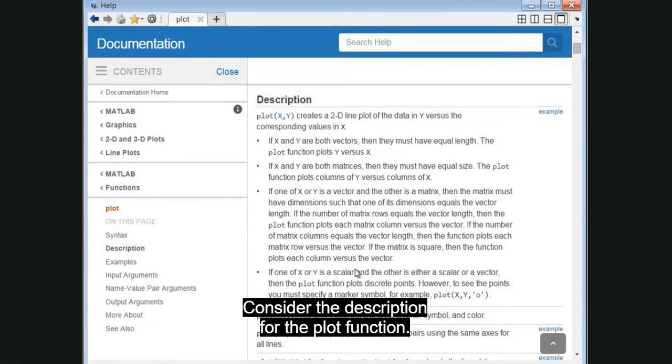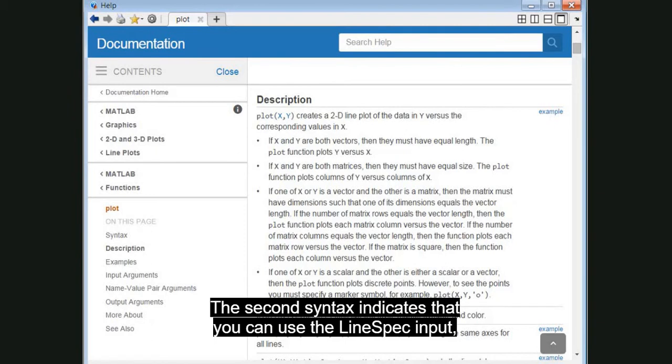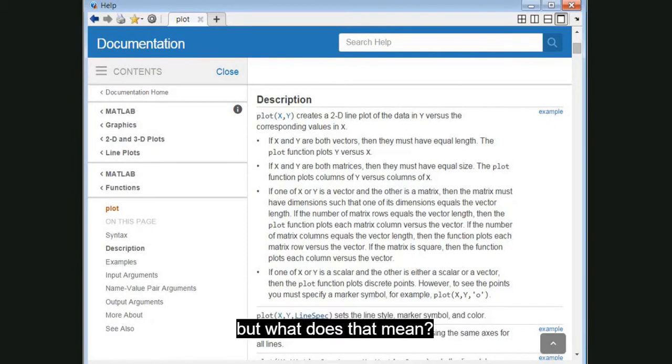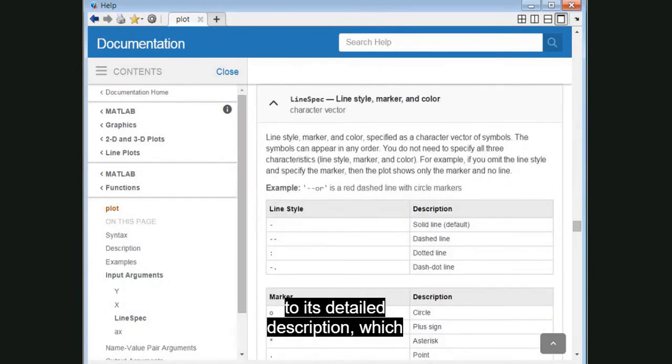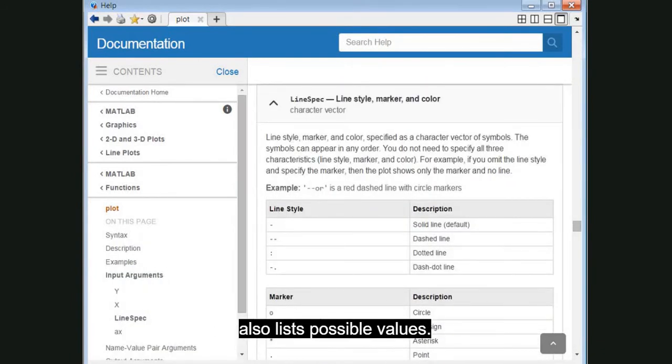Consider the description for the plot function. The second syntax indicates that you can use the line spec input. But what does that mean? You can click the input to navigate to its detailed description, which also lists possible values.